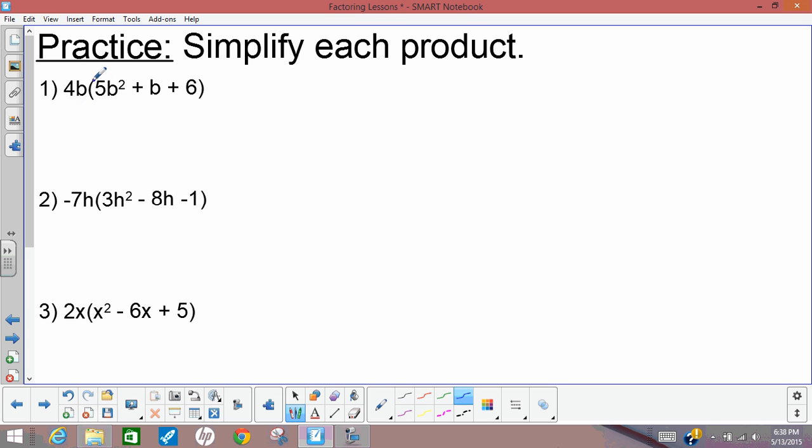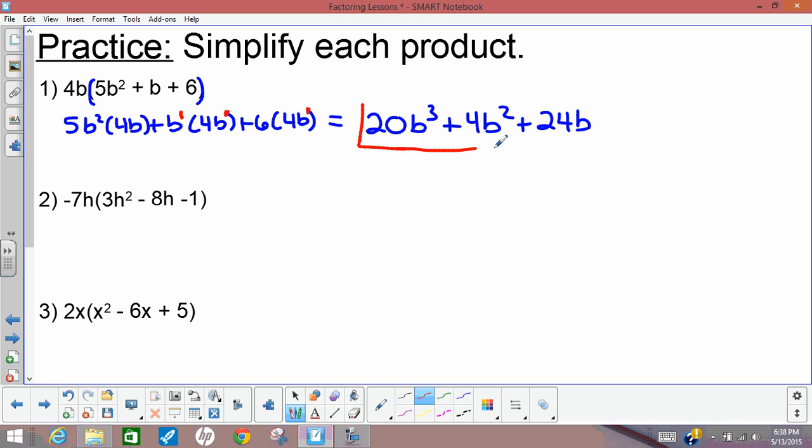So here I'm multiplying everything in parentheses by 4b. So 5b squared times 4b plus b times 4b plus 6 times 4b. And I end up with 20b cubed, or b to the third, plus 4b squared plus 24b. And remember here, if there's no exponent shown, the exponent is a 1. So that's how I got b squared: b to the first times b to the first is b to the second.